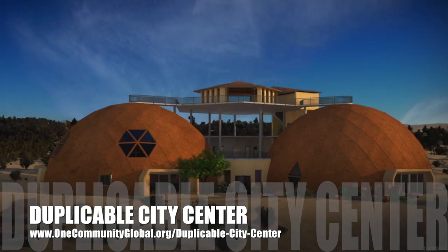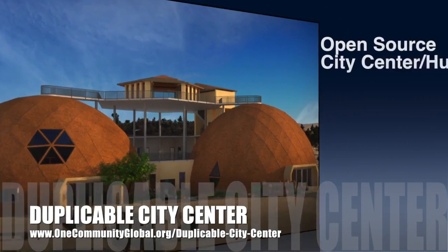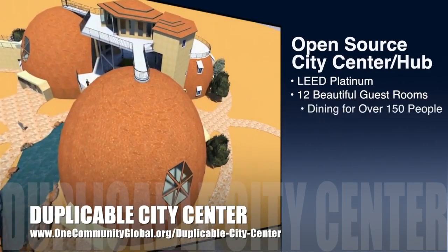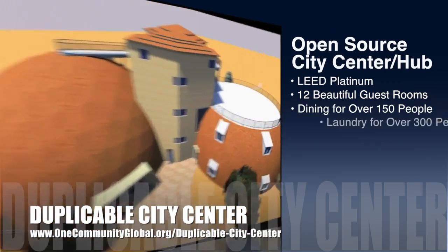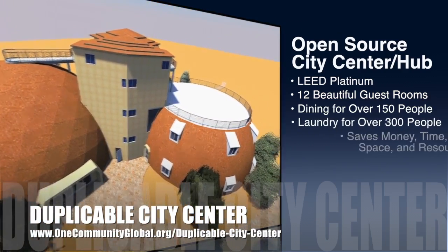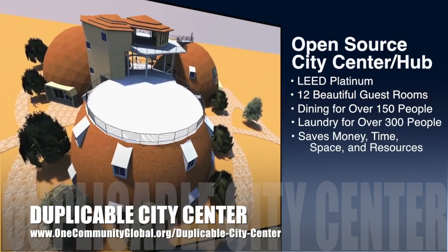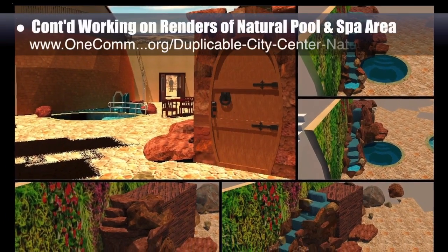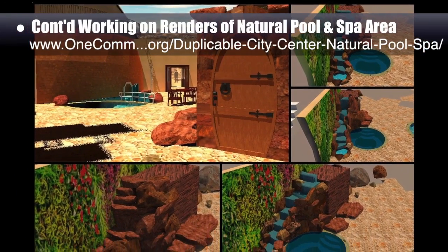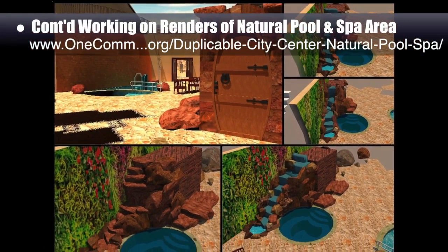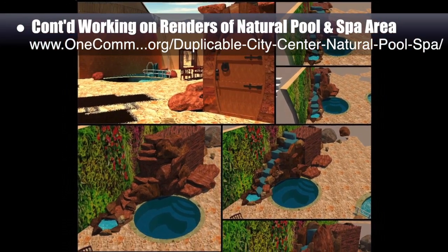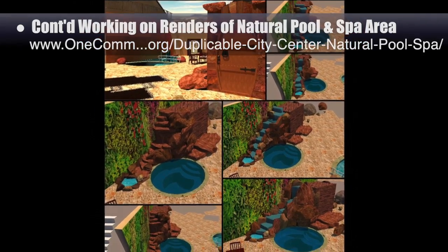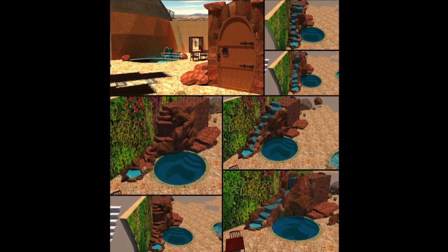OneCommunity is also creating an open source duplicable city center designed to be LEED Platinum certified, provide 12 guest rooms, dining for over 150 people, and laundry and recreation space for over 300 people — all while saving money, time, space, and resources. This week the core team continued working on the renders for the natural pool and spa area, focusing on creating three different designs for the waterfall, arched stonework around the mechanical room door, and a small pond near the waterfall.